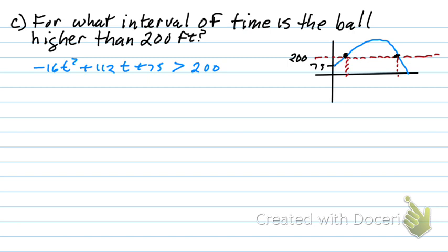So I get my 200 brought across. So I've got negative 16 T squared plus 112 T minus 125 is bigger than zero. I'm looking at that. I've got negative 16 and 125 and 112. We could try the AC method and see if that'll factor. Or we could just go right to the quadratic formula and just plug those values in and see what we get. I think that'd make more sense in this case.